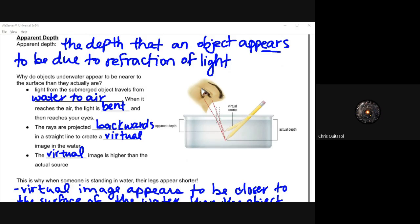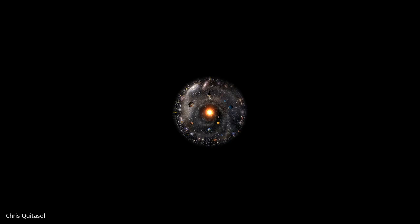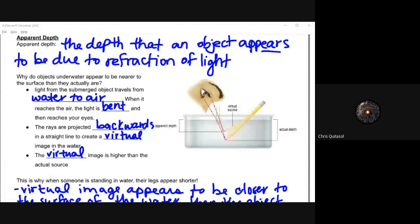The light is bent away from the normal. That shows the apparent depth of an object as opposed to its real depth.